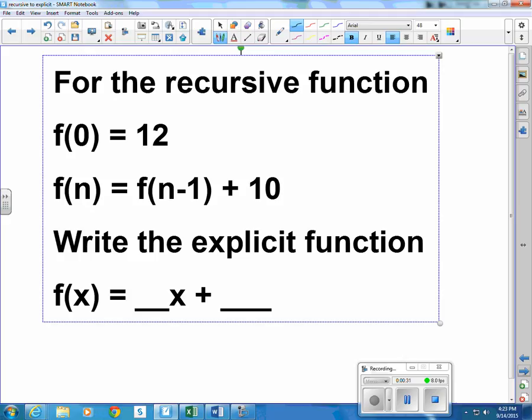Well, what this is saying is that when x is 0, the function evaluates at 12, so we know that would be like a y-intercept. And to get the nth value, we go to the one right before it and add 10. So an equation, an explicit function that adds 10 each time, would be 10x plus 12. That is the explicit function that matches this recursive function above.